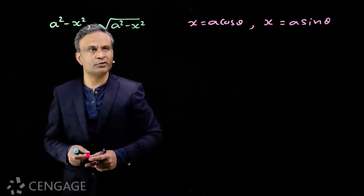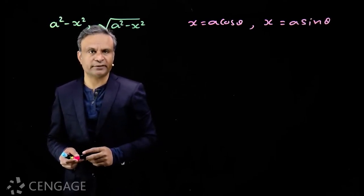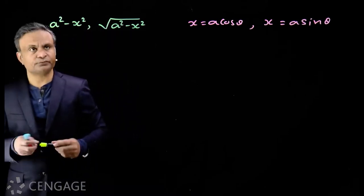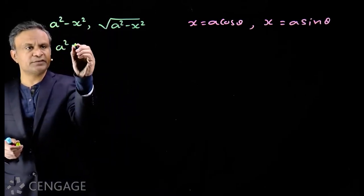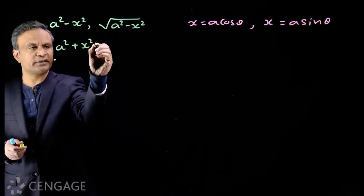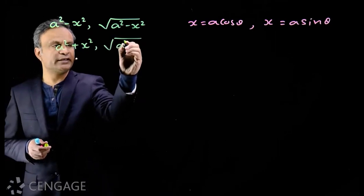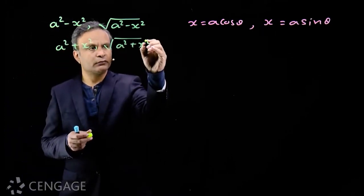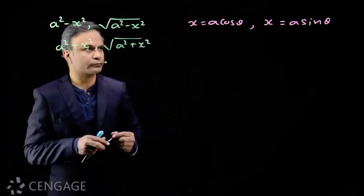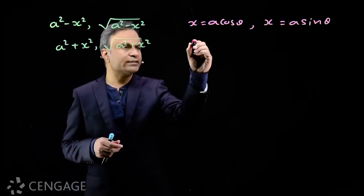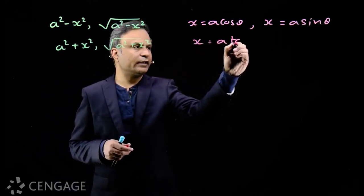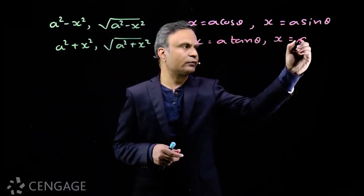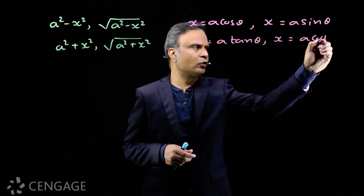√(a² cos²θ) is a cosθ. If we have an expression like a² + x² or √(a² + x²), we put x equal to either a tanθ or a secθ.